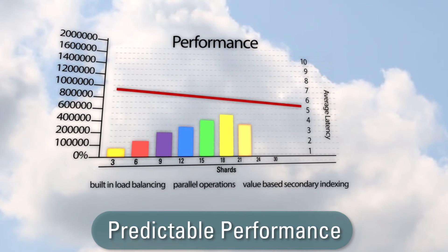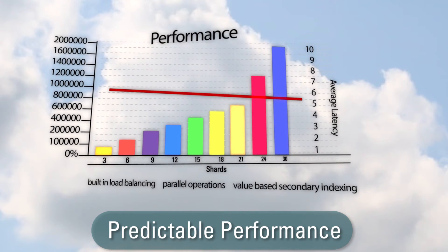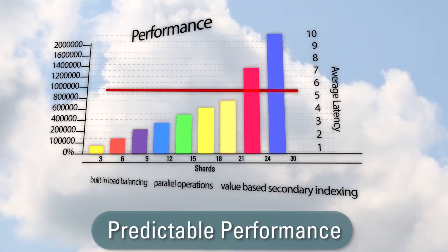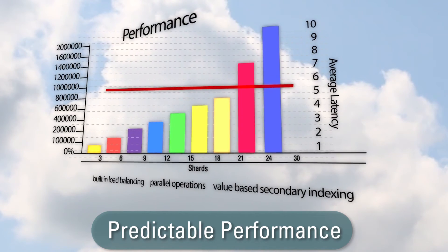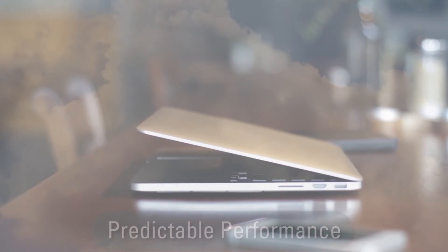You get predictable performance. Scale performance linearly through horizontal partitioning that leverages built-in load balancing, parallel operations, and value-based secondary indexing.